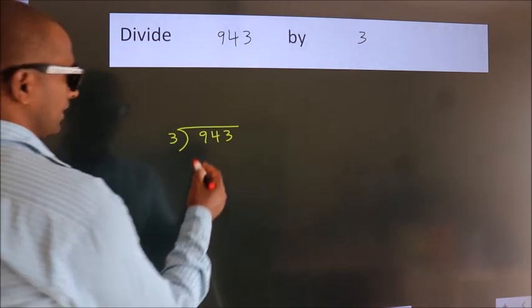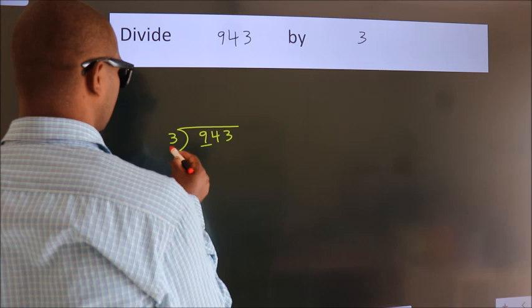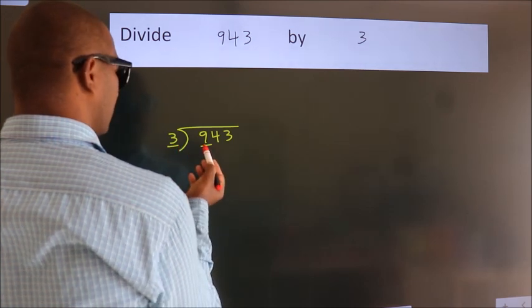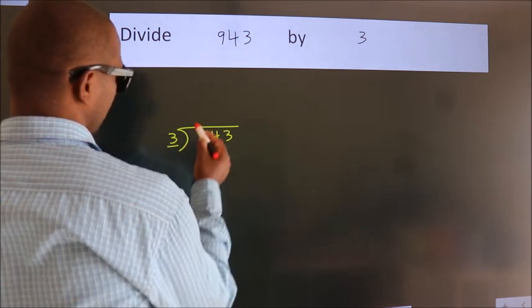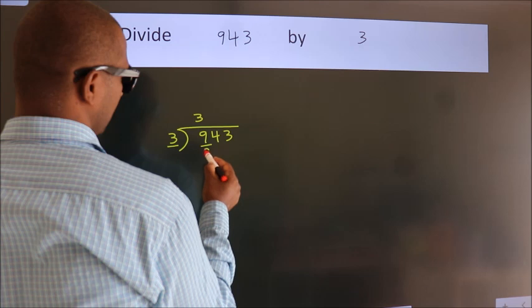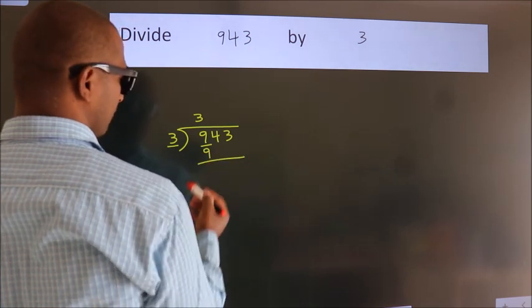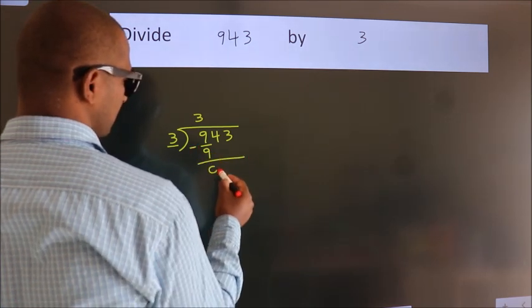Next, here we have 9 and here 3. When do we get 9 in the 3 table? 3 threes are 9. Now we should subtract. We get 0.